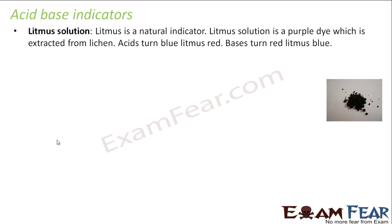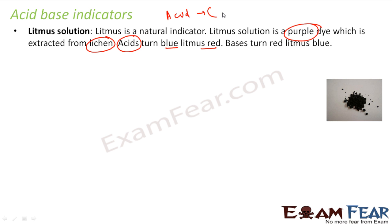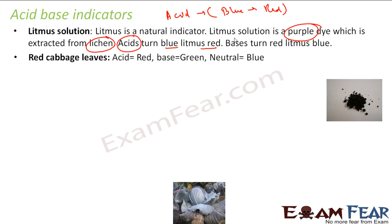Litmus solution is one indicator — it is a natural indicator. It is a purple dye which is extracted from a lichen plant. Acid turns litmus from blue to red, and base turns red litmus to blue. This is a natural indicator.